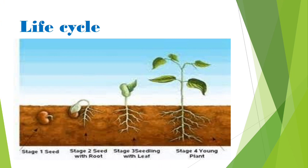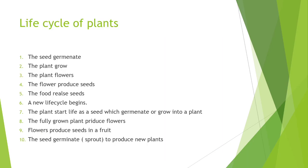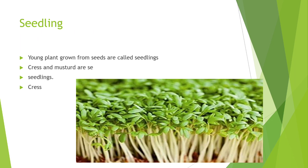In stage one: seed. Stage two: seed with roots. Stage three: seedlings. Stage four: young plant. Then flower, fruit, and then seed again. Okay kids, this lecture is over. This is what you need to listen to — and it is not homework.